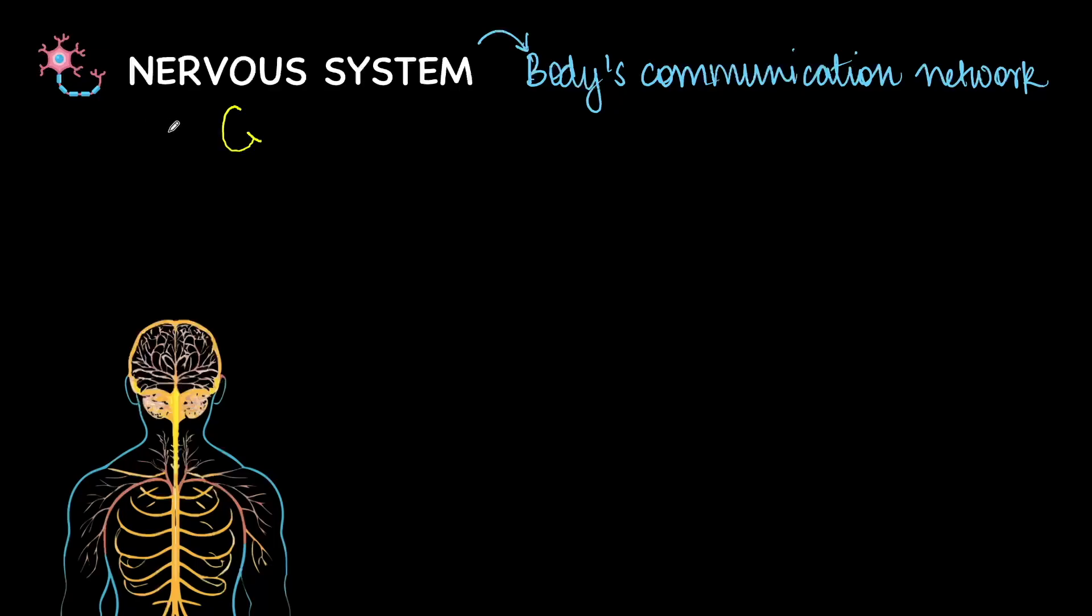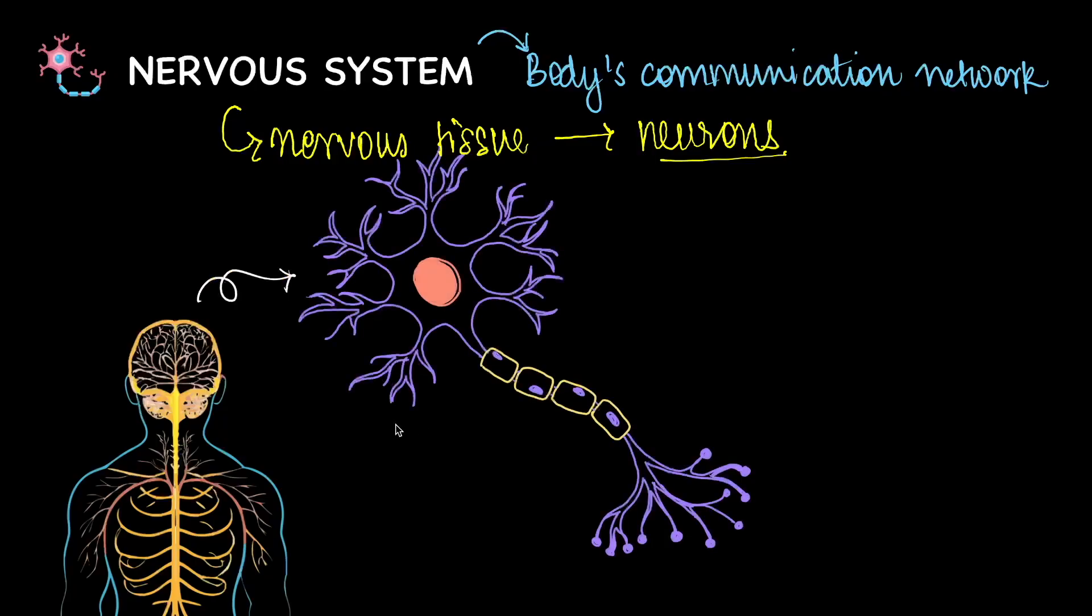Now the nervous system of course is made of the nervous tissue. And one of the important components of the nervous tissue are the neurons or the nerve cells. Now the neurons are responsible for communicating these messages. And these messages travel in the form of electrical signals or you could say electrical impulses.